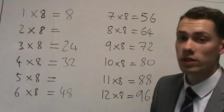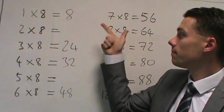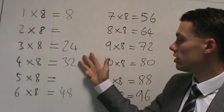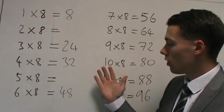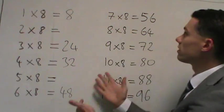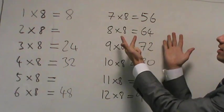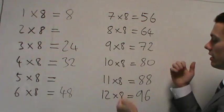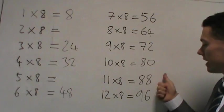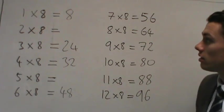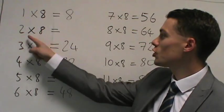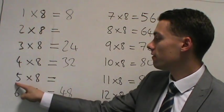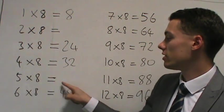So let's go through it together now. 8, 24, 32, 48, 56, 64, 72, 80, 88 and 96. So hopefully you've got that 2 times 8 is 16. And 5 times 8 is 40.